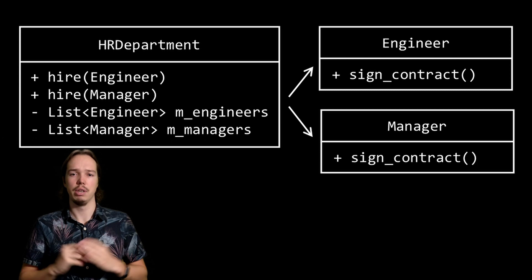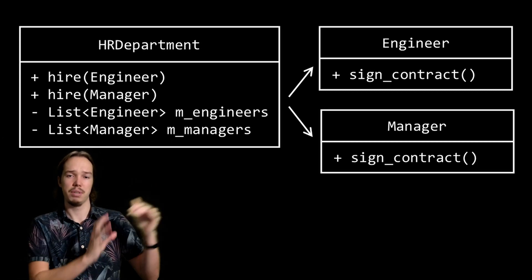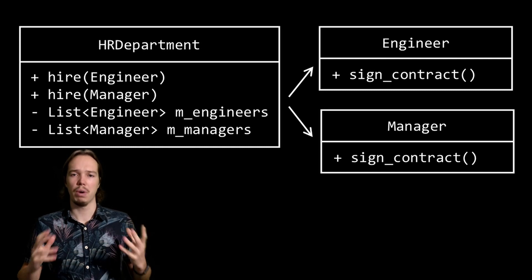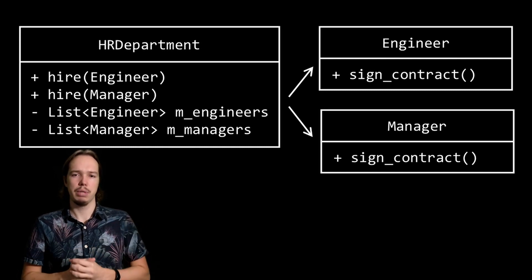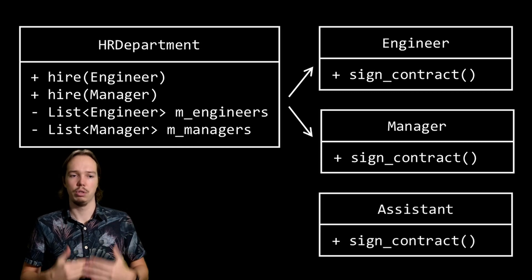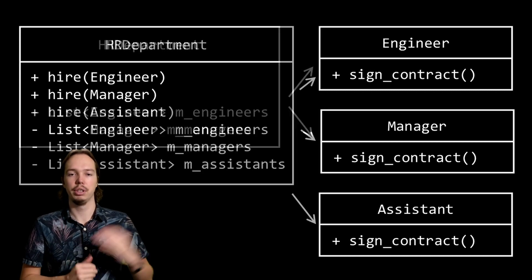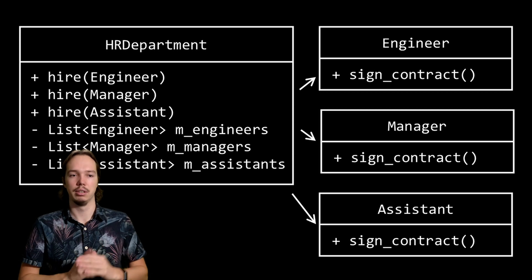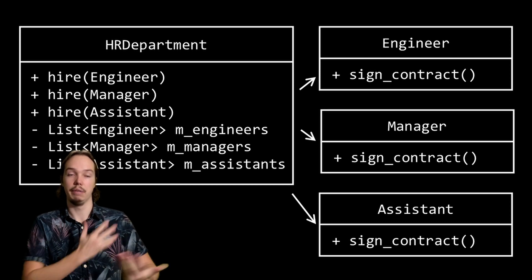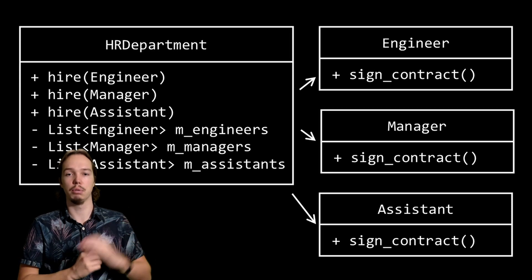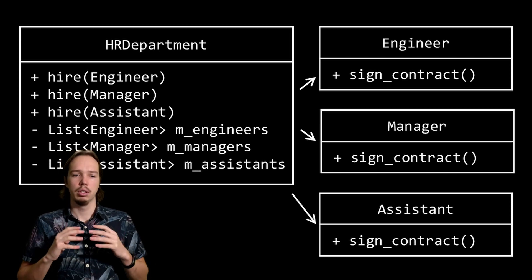Regardless of the design we look at, both this version and the one with separate classes violates the open-close principle. Why is this? Well, imagine what would happen if you got another requirement about hiring assistants. In order to add this functionality to the existing HR department class, we would have to modify it — we'd have to add another hire function and we'd have to add a third list. And every time you modify a class, there's a risk that you might accidentally introduce a bug.